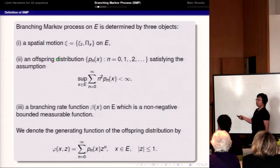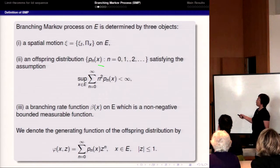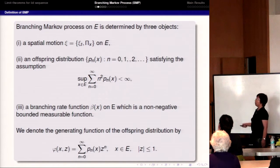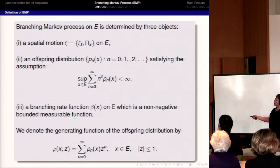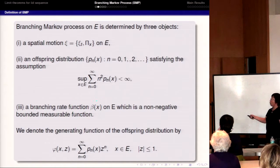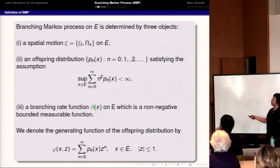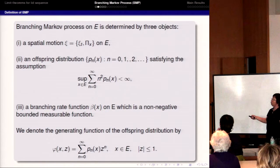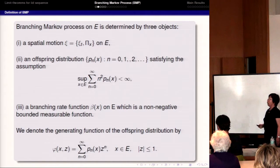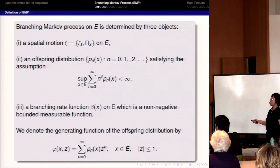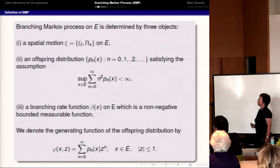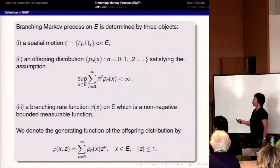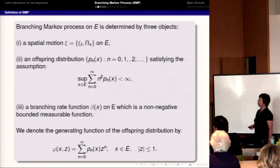The second object is the offspring distribution. For each fixed x — the location of the particle — if a particle dies at point x, it gives birth to n particles with some probability. Because I'm thinking about the central limit theorem, I make the second moment uniformly bounded. The third object is the branching rate, which is a non-negative function bounded on E, used to describe the lifetime. For example, if beta is a constant, each particle's lifetime is an exponentially distributed random variable with parameter beta.